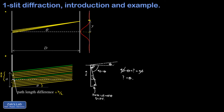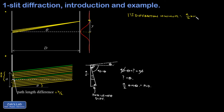So theta is the angle between the center line and the location of the first diffraction minimum. With a over 2 as the hypotenuse of this triangle, a over 2 times the sine of theta gives the opposite side — that's the path length difference. We arrive at our formula for the first diffraction minimum: a over 2 times sine theta equals one half of a wavelength. Multiplying both sides by 2, we get a sine theta equals lambda.